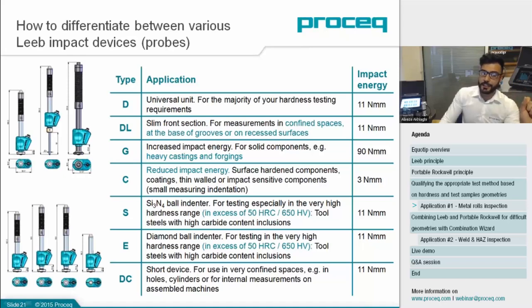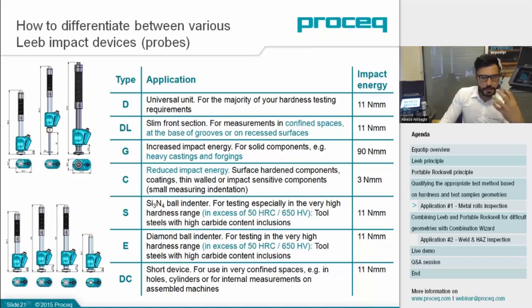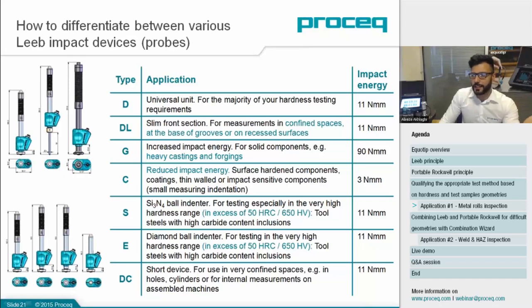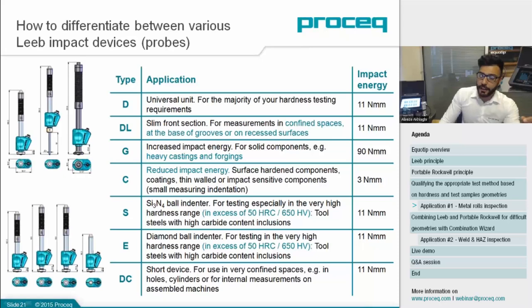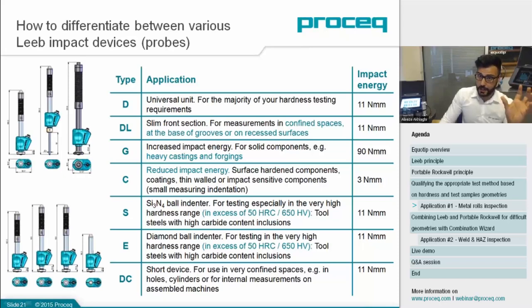The S-device has a ceramic indenter, while the E-device has a diamond indenter — the hardest material known to man. The D-device is the general indenter for standard Leeb and suits 90–95% of applications, but it's designed for hardness levels up to about 50–55 Rockwell C. Anything above 50–55, you should really use either an S or E device, because the tungsten indenter of the D-device wears out significantly faster at higher hardness levels. This is where deviation begins. You have to draw the line and make sure you choose the right probe for the right job.